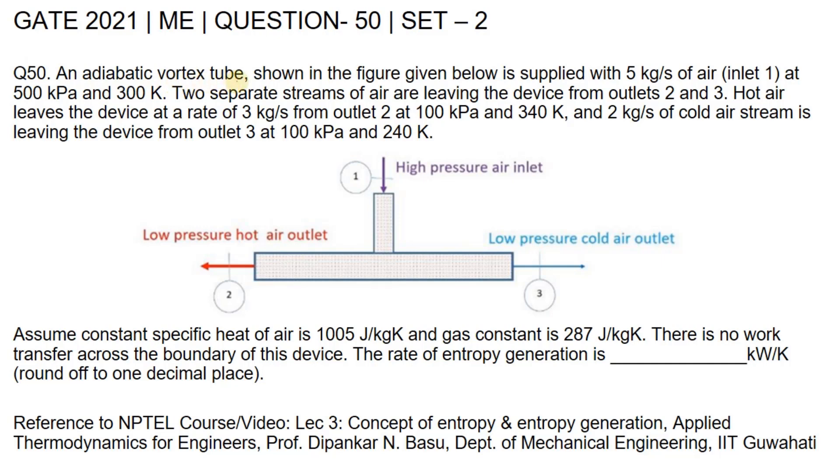An adiabatic vortex tube shown in the figure below is supplied with 5 kg per second of air at inlet 1, a high pressure air inlet at 500 kPa and 300 K. Two separate streams of air are leaving the device from outlets 2 and 3.